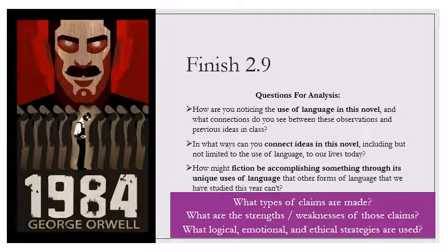Whichever power controls equatorial Africa, or the countries of the Middle East, or southern India, or the Indonesian archipelago, disposes also of the bodies of scores of hundreds of millions of ill-paid and hard-working coolies. The inhabitants pass continually from conqueror to conqueror, and are expended, like so much coal or oil, in the race to turn out more armaments, to capture more territory, control more labor power, and so on indefinitely.